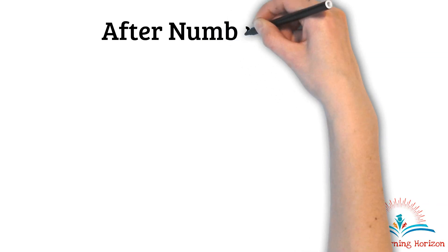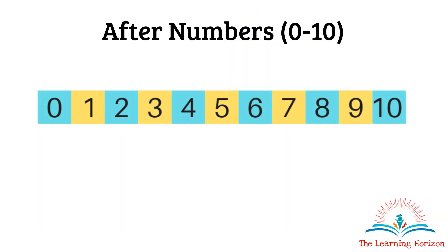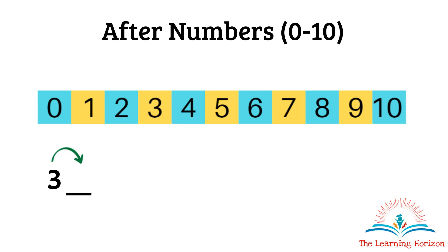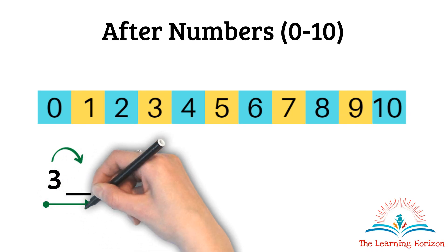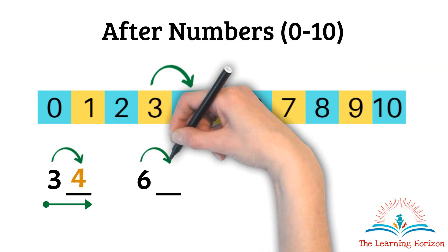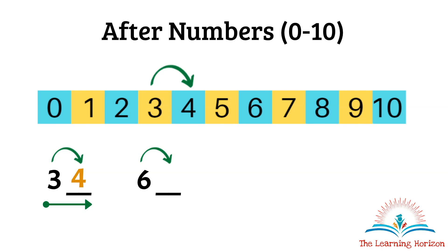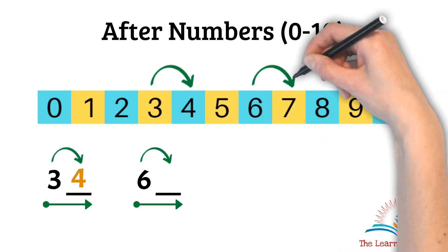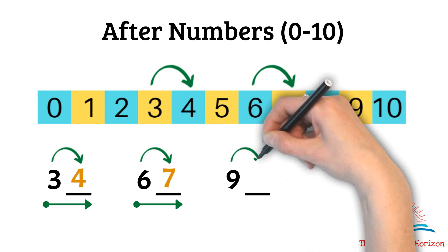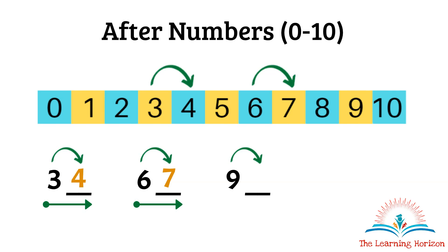After numbers: from 0 to 10, which is the number that comes after 3? To find the number I will move forward — it is 4. Which is the number that comes after 6? Again I will move forward from 6 to find the number — it is 7.